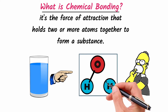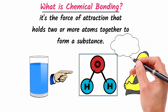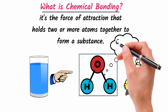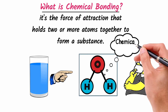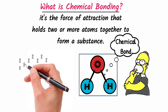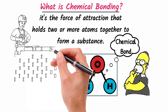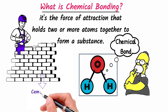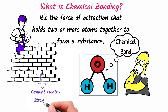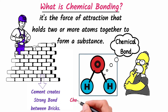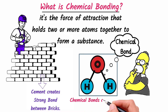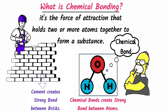The force of attraction that binds atoms together is known as a chemical bond. It is just like cement that's used to hold bricks together — it works by creating a strong bond between the bricks. Chemical bonds work in much the same way; they create a strong bond between atoms so that they hold atoms together.